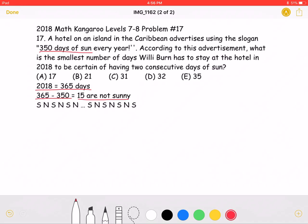Now, let's refer back to the problem and see that it asks for the number of days Willie Byrne must stay at this hotel in 2018 to be certain of having two consecutive days of sun. So, in the worst case scenario, every other day is not sunny.